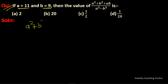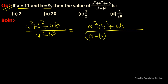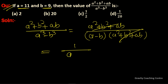So (a² + b² + ab) / (a³ - b³). The formula for a³ - b³ = (a - b)(a² + b² + ab), so the numerator and denominator cancel, giving 1/(a - b). Putting values: 1/(11 - 9) = 1/2.